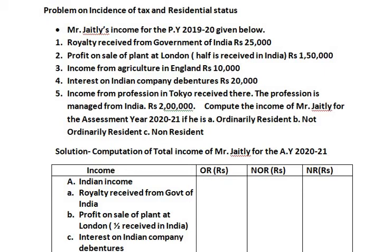Before we start solving the sum, let us understand each point. The first item is royalty received from the Government of India. There are four kinds of income: Indian income, foreign income, exempted income, and past untaxed foreign income. Since the term 'Government of India' indicates this income belongs to India, it is Indian income. Indian income is taxed in the hands of all residents — ordinarily resident, not ordinarily resident, and non-resident. Therefore, royalty received from the Government of India is taken in all three columns.